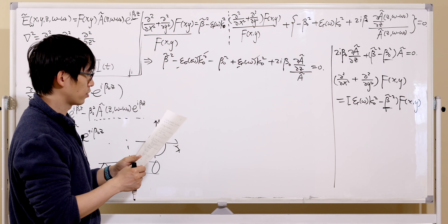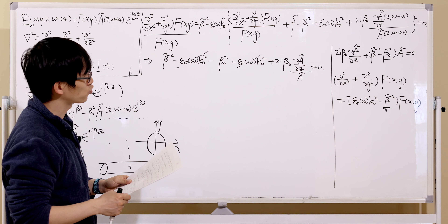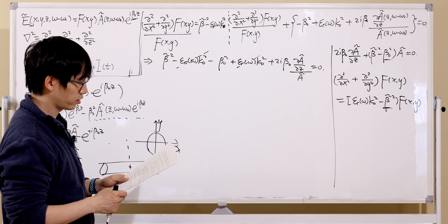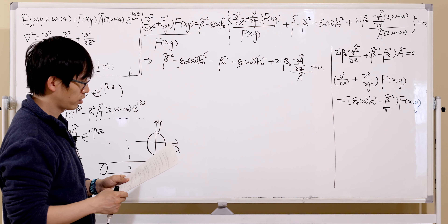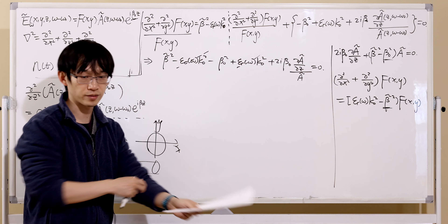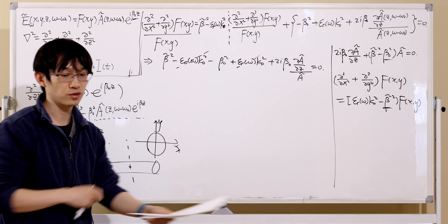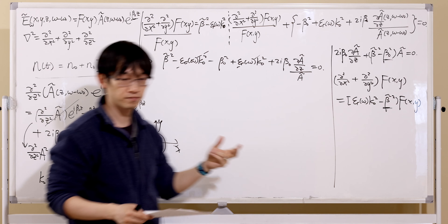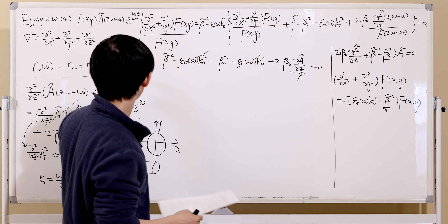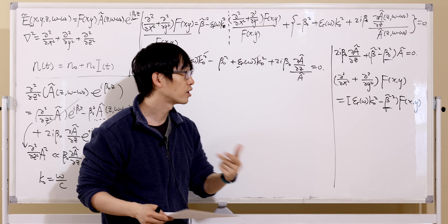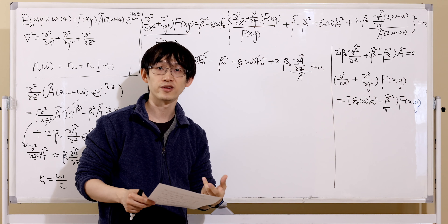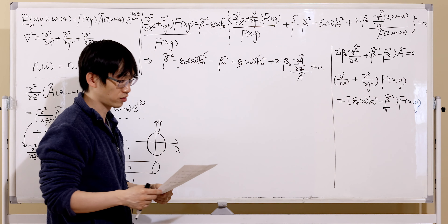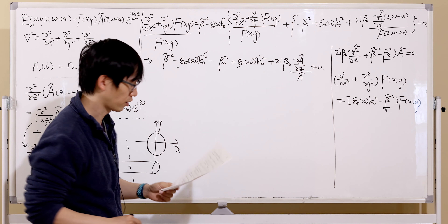The strategy is perturbation theory. We assume the nonlinear effect is very weak (small) and the dispersion is also very weak. Both are valid assumptions when you check the numbers in fiber. To proceed, we expand epsilon_r.